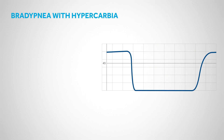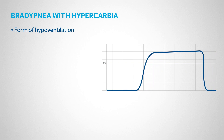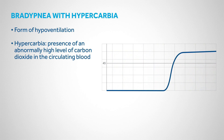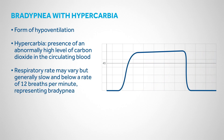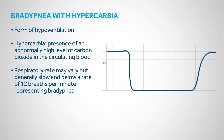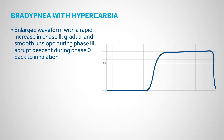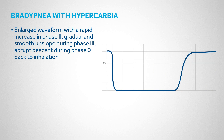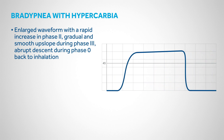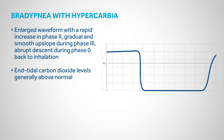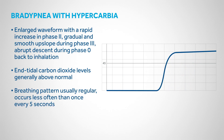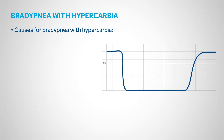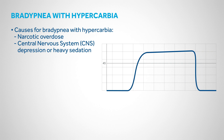Bradypnea — abnormally slow breathing — with hypercarbia (increased CO2) is a form of hypoventilation. Hypercarbia is defined as an abnormally high level of carbon dioxide in the circulating blood. Respiratory rate is generally slow and below 12 breaths per minute. The increased CO2 results in an enlarged waveform with rapid increase in Phase 2, gradual and smooth upslope during Phase 3, and abrupt descent during Phase 0. End-tidal CO2 levels are generally elevated above normal, with breathing occurring less often than once every 5 seconds. Common causes include narcotic overdose, central nervous system depression, or heavy sedation.